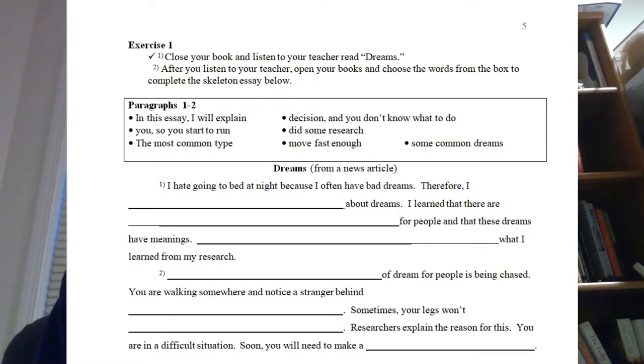First, students are going to listen to the model essay read by the teacher. Students will be writing a classification essay — explaining types of things. The model essay is about types of dreams. The information came from a news article, and students have found it entertaining and informative. I say to them: I'm going to read a sample essay. You'll just listen. After that, you'll be writing this essay.